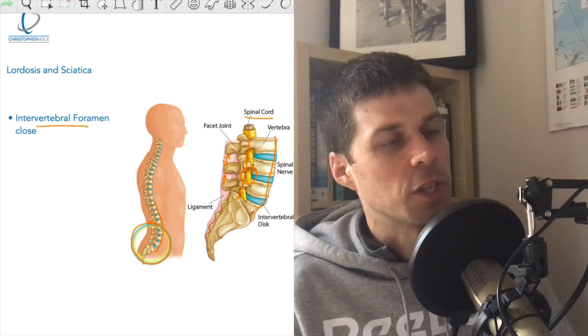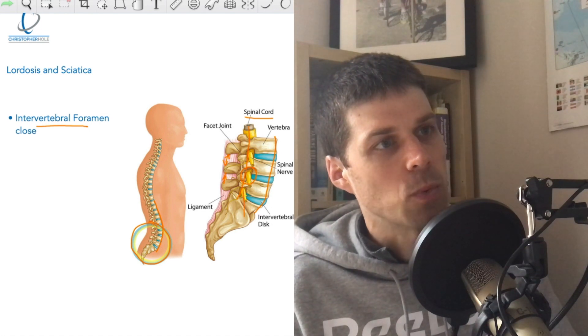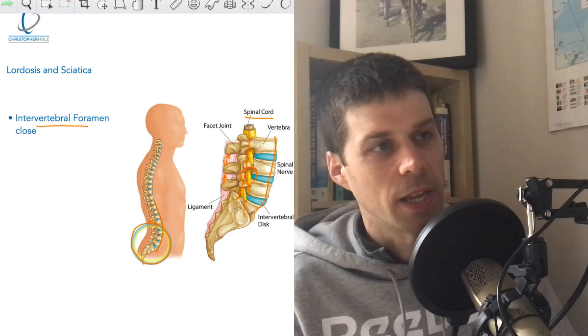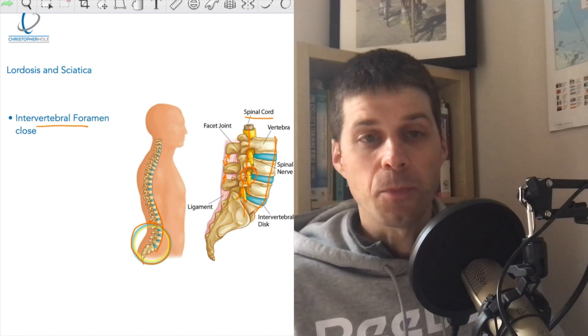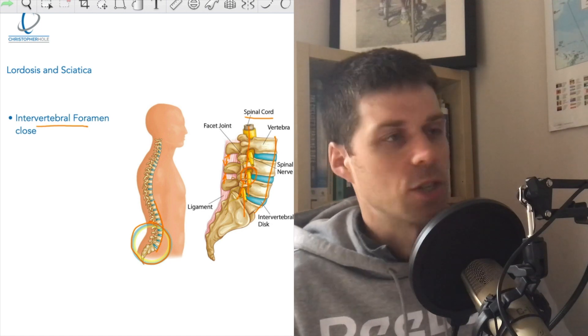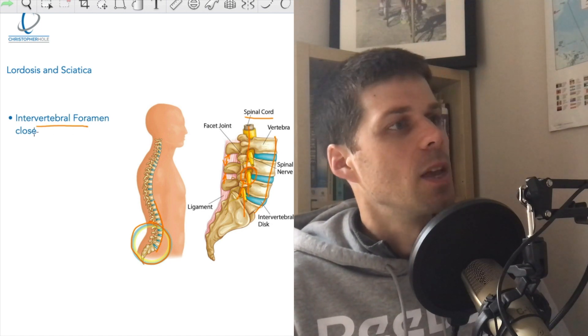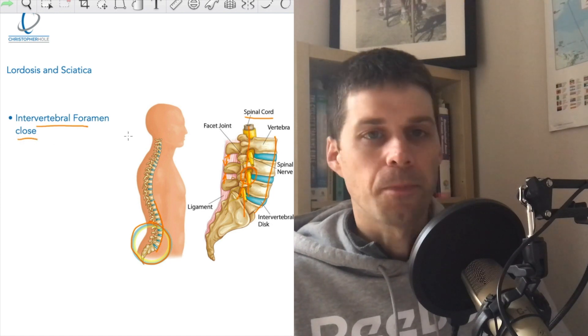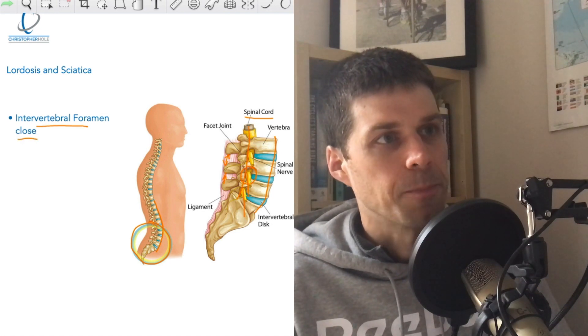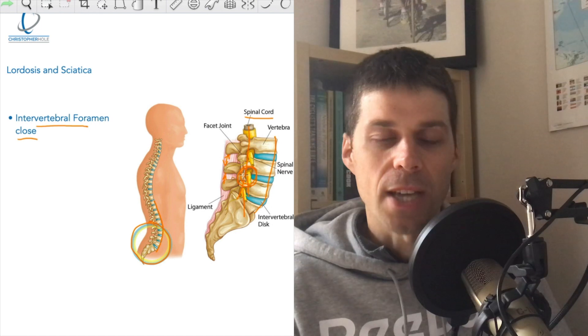So we're specifically talking more about this one here and this one here. So when we get the lordotic curve, or the exaggerated curve, and we get the condition we know as lordosis, these intervertebral foramen close—this gap gets smaller—and this can irritate the nerve.